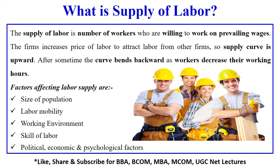Next comes the supply of labor. It is the number of workers who are willing to work at existing or prevailing wage rates. Suppose there are 100 workers in an area, but out of 100 only 50 are willing to work at a prevailing wage rate of rupees 400 per day. So in this case the supply of labor will be 50, not 100.